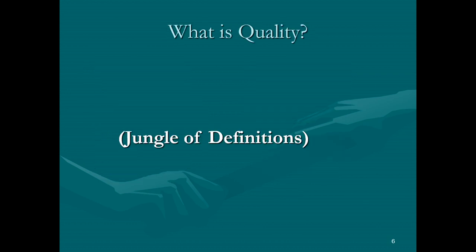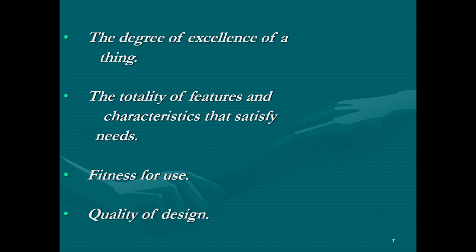There are many definitions of quality because each scientist sees it from a different point of view, and quality plays an important role at different parts inside an organization. The first definition is that quality is the degree of excellence of a thing — excellence meaning a high level of achievement or perfection — so quality can be defined as the degree of perfection for everything.